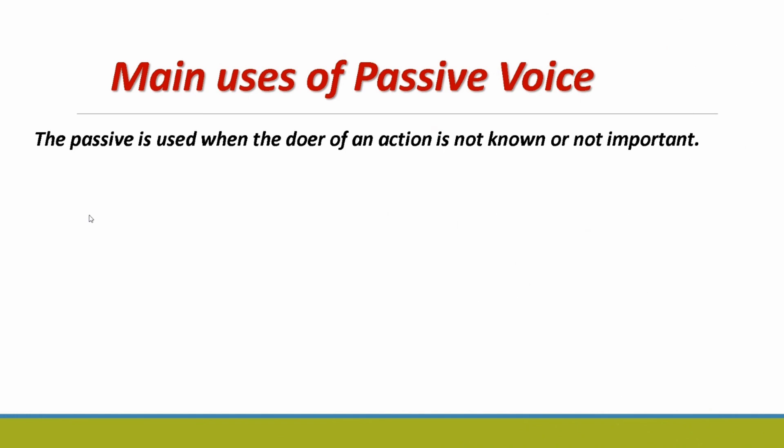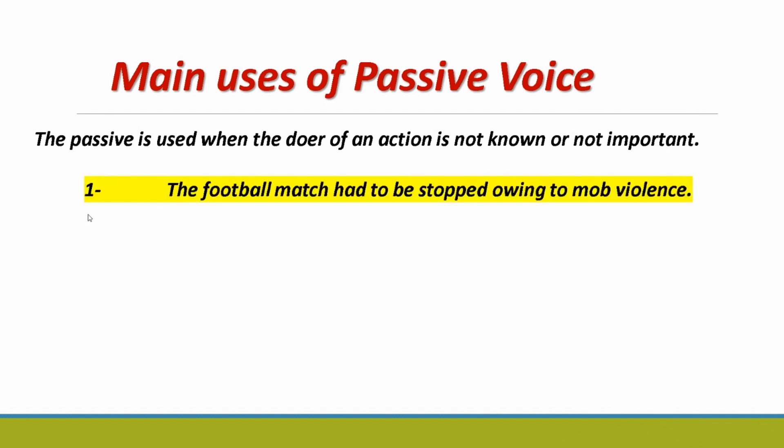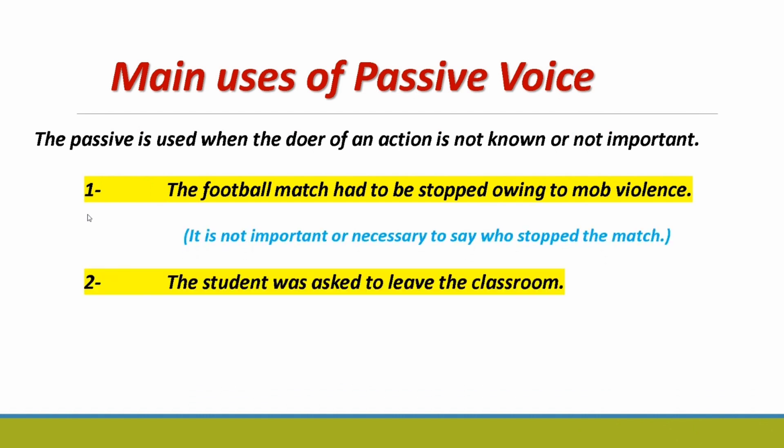The first use: the passive is used when the doer of an action is not known or not important. Example: 'The football match has to be stopped to avoid more violence' — the match had to be stopped due to violence. Next sentence: 'The student was asked to leave the classroom' — this is in passive voice; the student had to leave the classroom because of someone.